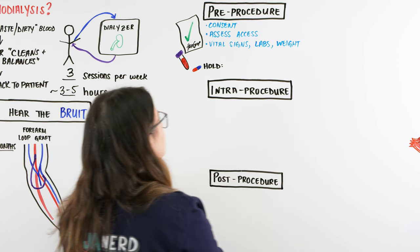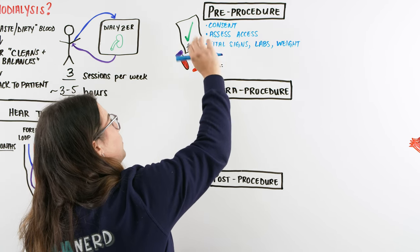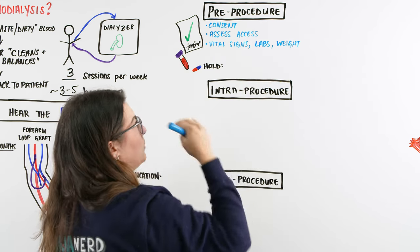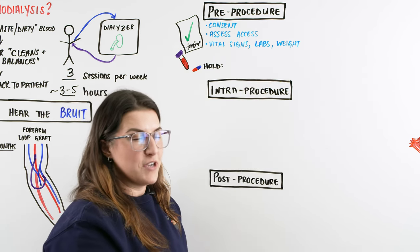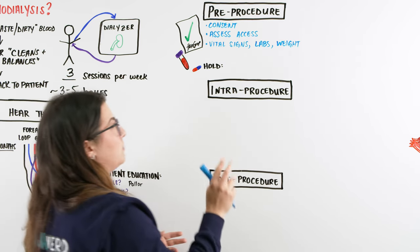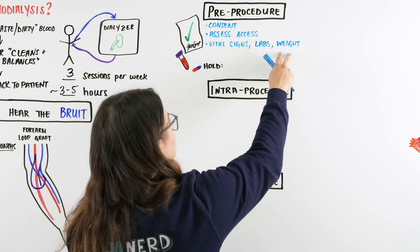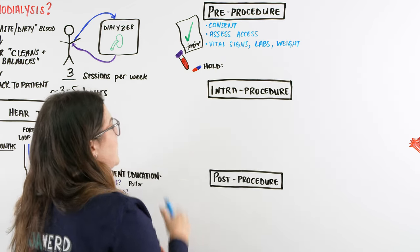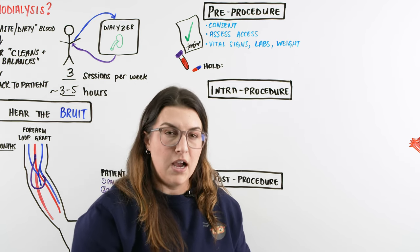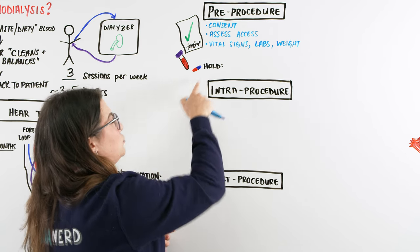In summary: we have consent, we've checked the access point, vital signs look normal, labs are as expected for someone coming in for dialysis — probably a little abnormal, but we hope to correct them — and we've checked the patient's weight. With these patients, there are also medications that should be held prior to dialysis unless instructed otherwise by the doctor.